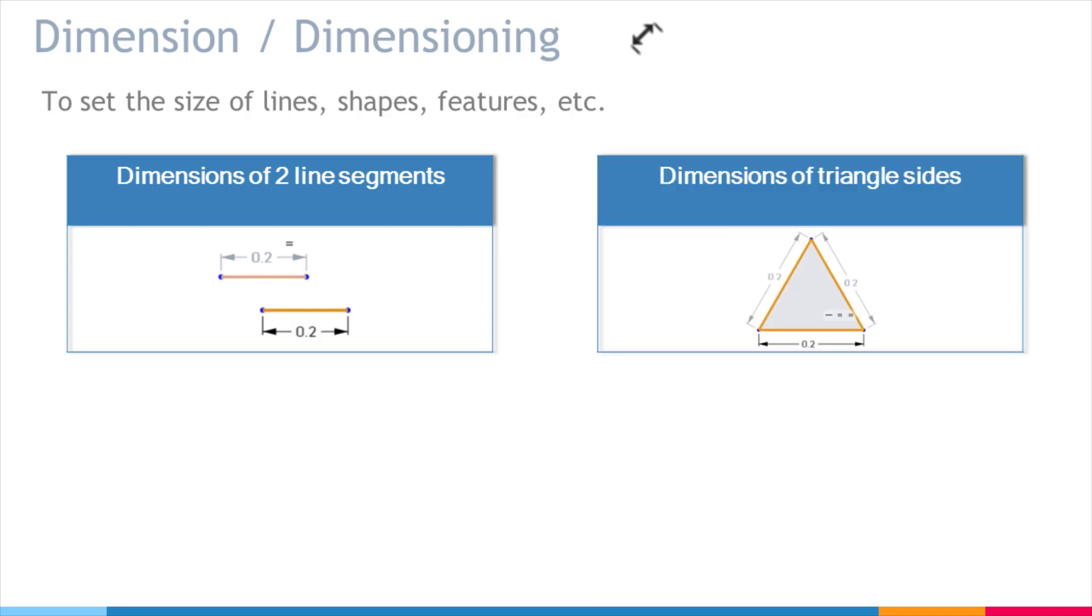Next here we have a triangle and each of the three sides of the triangle is dimensioned and you can see that they're all 0.2 inches, so basically it's an equilateral triangle since all three sides are equal.